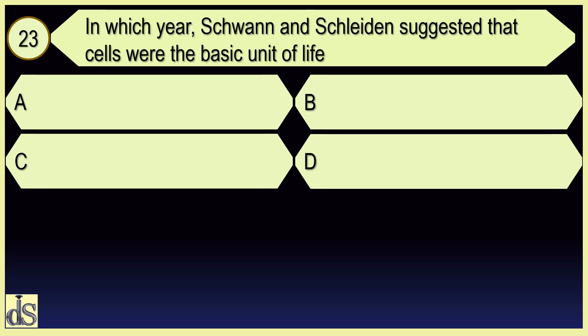In which year Schwann and Schleiden suggested that cells were the basic unit of life? 1839.